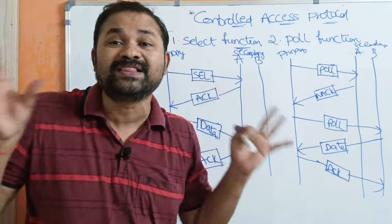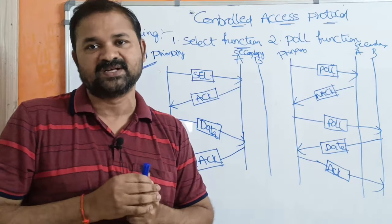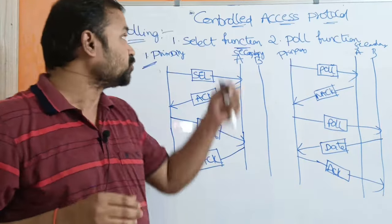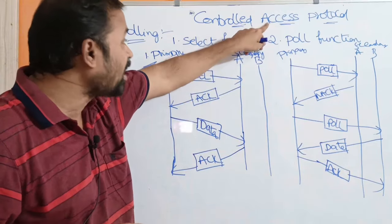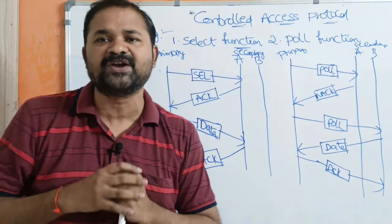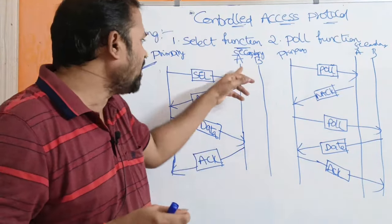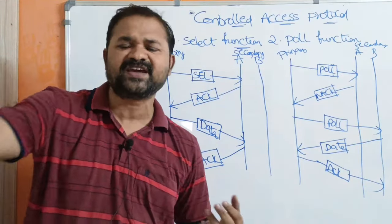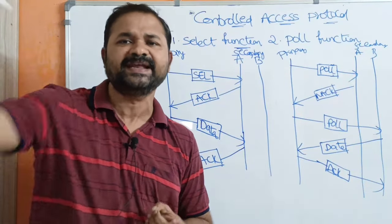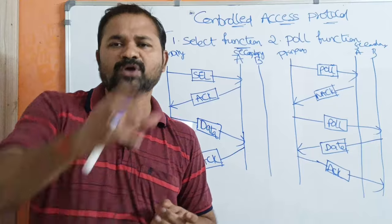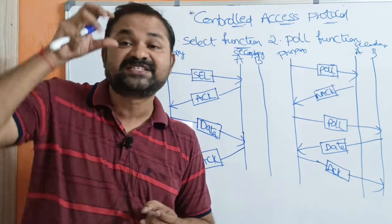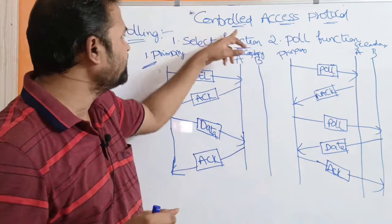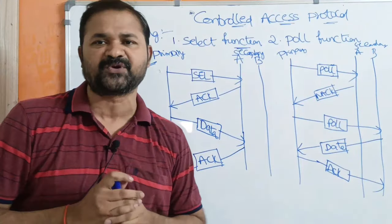This is about the polling controlled access protocol. Controlled access protocol means out of all the devices, which device can send the frame should be controlled. We have multiple devices like A, B, C, D, E — out of all of them, which device can send the data should be decided based upon the controlled access protocol.